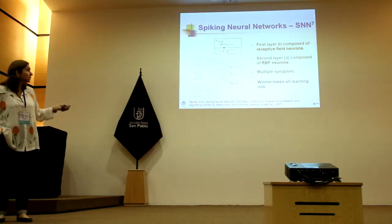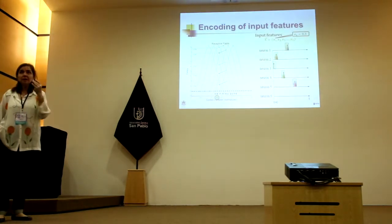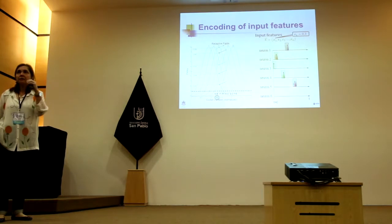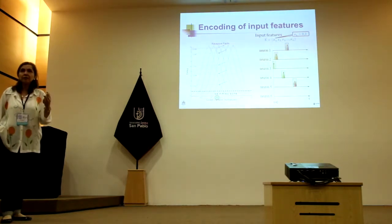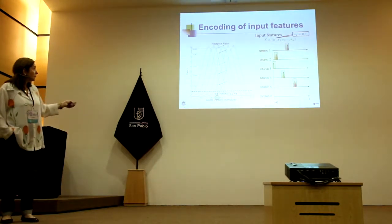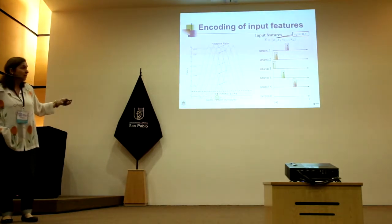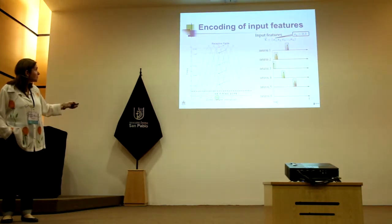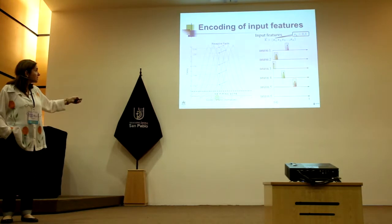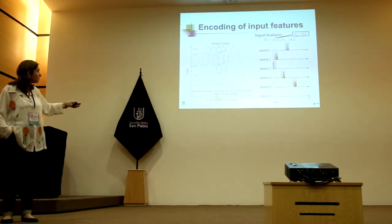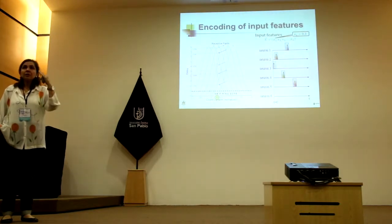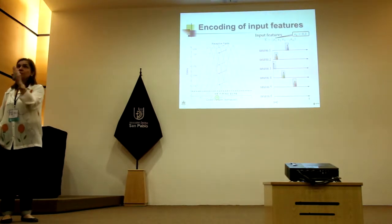The idea is: when you receive inputs — real numbers or binary numbers — you transform them into spikes for the neural network. The input layer uses receptive field neurons, which are basically Gaussians that transform real numbers into spikes. The second layer uses radial basis functions (RBF), and this is a kind of unsupervised learning. To understand how you transform a real number — say 0.3 — into spikes: these are the receptive fields. Depending on which Gaussian fires first determines the order of spikes. The first neuron to fire for 0.3 is the third Gaussian — zero delay — with delay increasing going down.